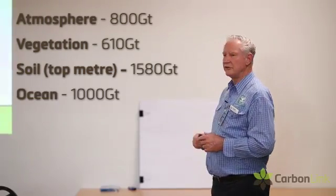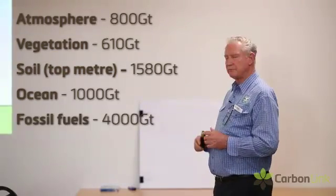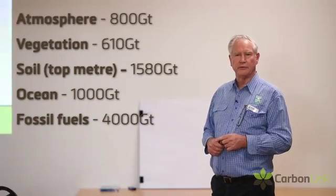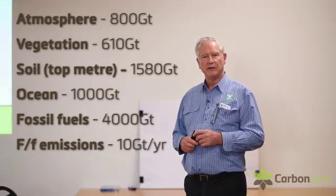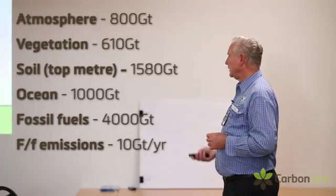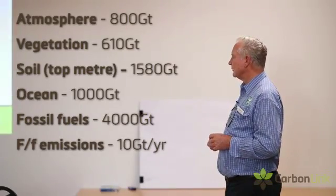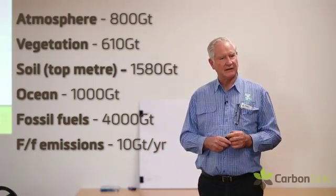There's about 1,000 gigatonnes in the surface of the ocean, and about 4,000 gigatonnes in known reserves of fossil fuels. Annually, we emit about 10 gigatonnes of carbon into the atmosphere through burning fossil fuels. To me, it's not a big ask to take 10 gigatonnes a year and put it away in a 1,580 gigatonne storage. That puts the maths in context of what we can do and the scale of soil carbon.